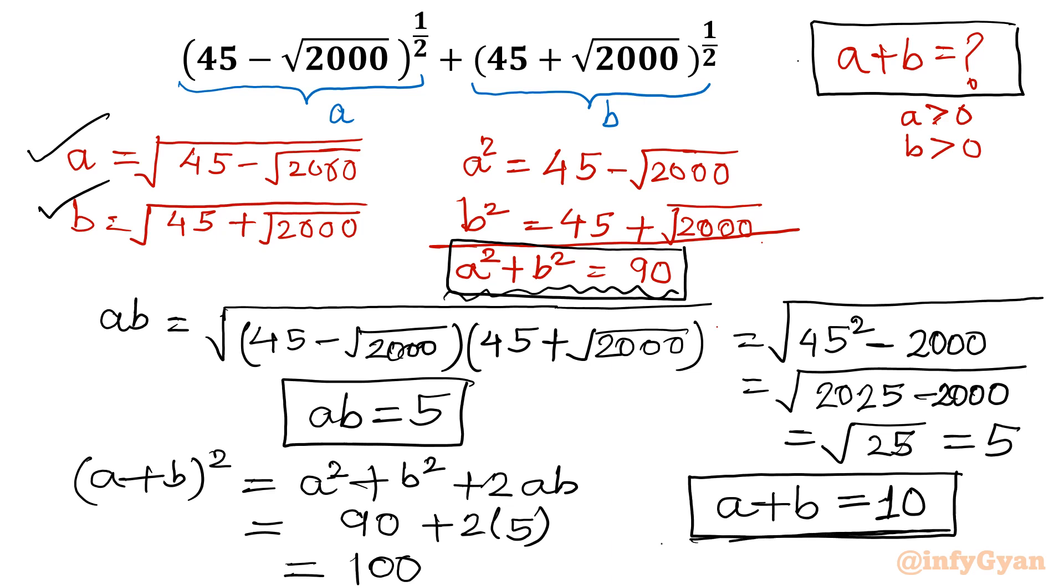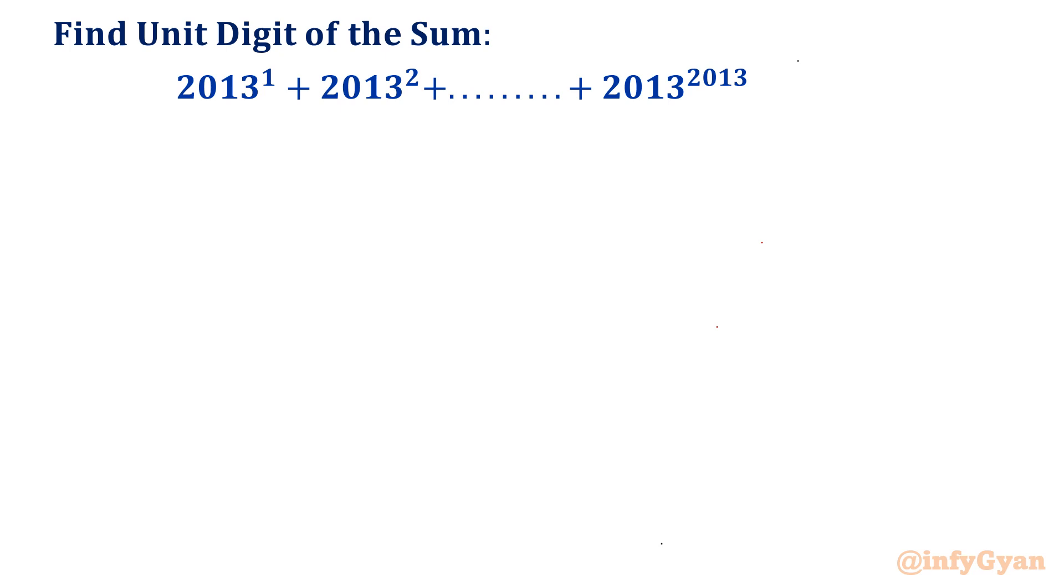Now problem number 2, which is very special and very interesting: find unit digit of the sum. To understand this question better, you have to target the one's place number. 3, 3, 3, 3, and then power is 1, 2, 3, 4 and so on. Let's try to understand the analogy behind it. So I will write: 3¹ = 3, 3² = 9, 3³ = 27. Now I will make one more column here for unit digit, let me write UD.